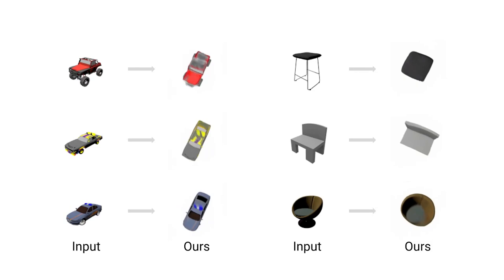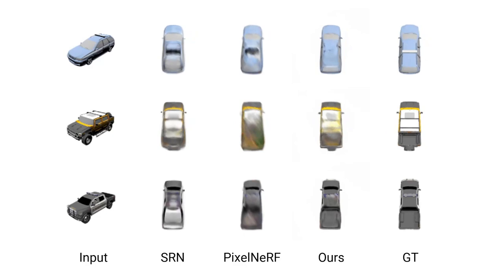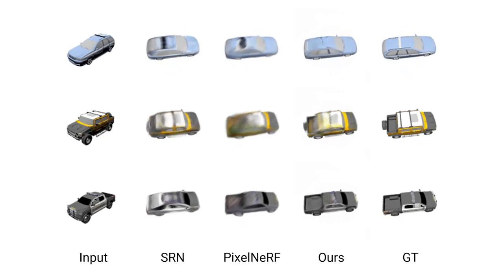Here is a comparison to previous methods like scene representation network and Pixel NERV. Our algorithm is able to produce state-of-the-art results on ShapeNet data. Note the unseen side of the car. Our method reduces the blurriness in Pixel NERV greatly and even predicts the correct pattern.